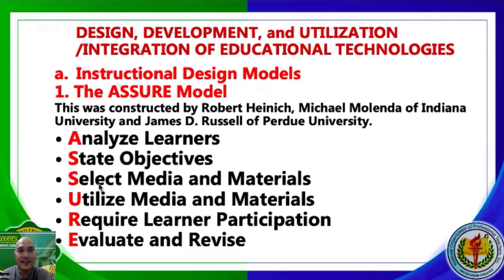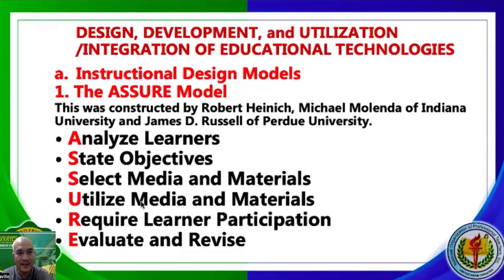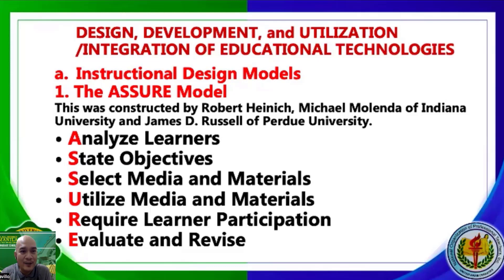When you have objectives, Select media and materials — that's when you choose. Don't just buy or grab materials randomly. When you see a good material, think: 'Is this good for Grade 2? Is this good for Grade 1?' After selecting, Utilize — use it. Then R means Require learner participation. Not only the teacher should use the material — there should be student participation, something interactive, where students are part of using the instructional material.